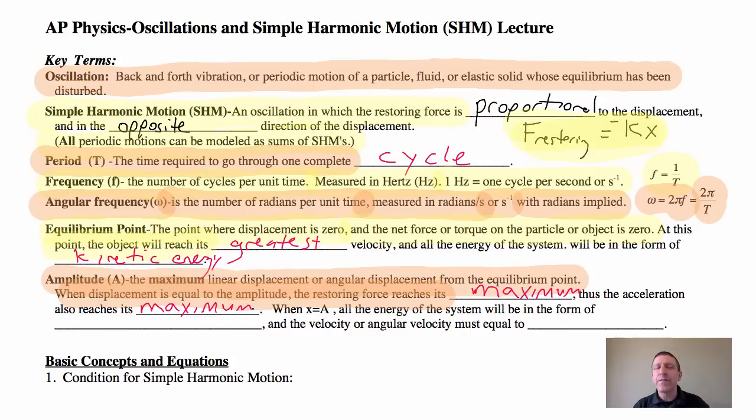Now think about this. As we'll see, an object on a spring, it can be in simple harmonic motion. What form is all the energy in when it's pulled as far as it's going to go? It's all in potential energy. And the velocity or angular velocity must be equal to zero. At the extremes of the motion, velocity must be equal to zero. Now, let's go ahead and take a look.